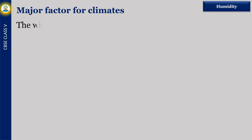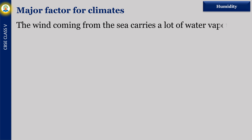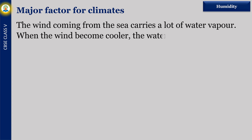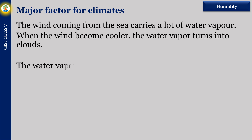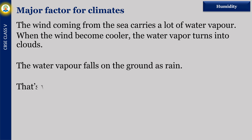The wind coming from the sea carries a lot of water vapor. When the wind becomes cooler, the water vapor turns into clouds. The water vapor falls on the ground as rain. That is why coastal areas receive more rainfall.